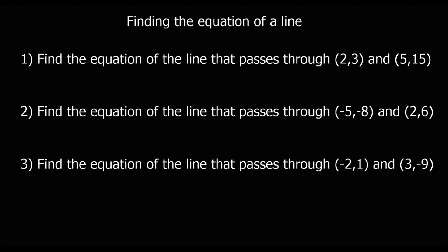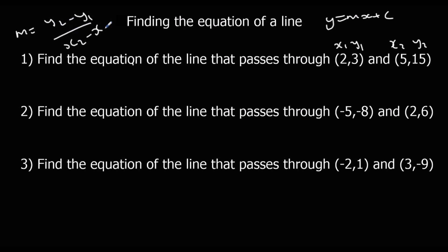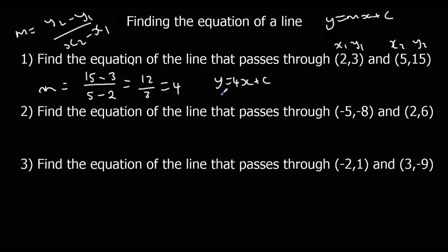See if you can have a go at these questions — first work out the gradient, then substitute into the equation of the line. For the first one, labelling x1, y1, x2, y2 and using the gradient formula: 15 minus 3 over 5 minus 2 gives 12 over 3, which is 4. So y equals 4x plus c. Substituting in x equals 2 and y equals 3: 3 equals 8 plus c, so c is minus 5. The answer is y equals 4x minus 5.